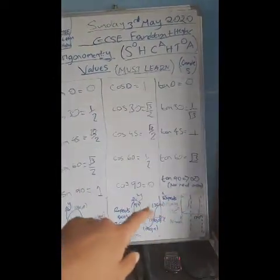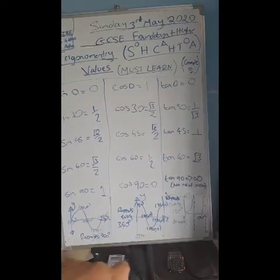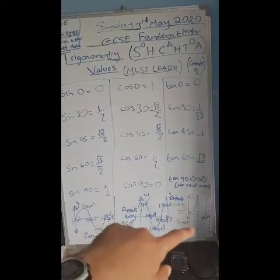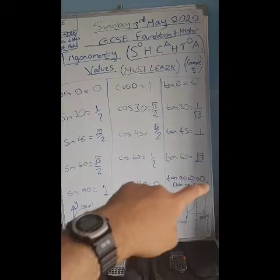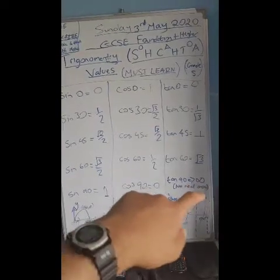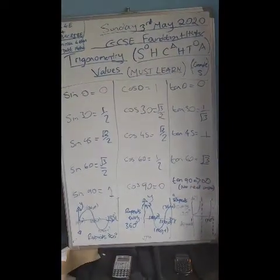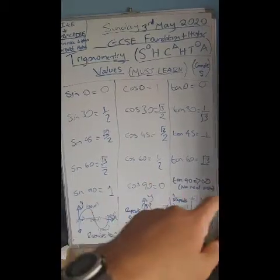The dashed lines means that they're actually asymptotes. It repeats a cycle every 180 degrees for a tan graph. It's an asymptote at 90 degrees, at 270, and then at 480.